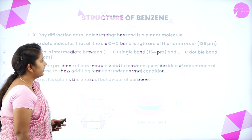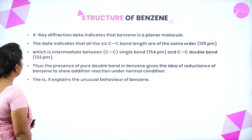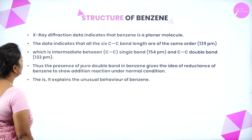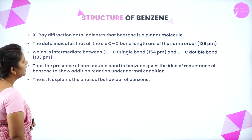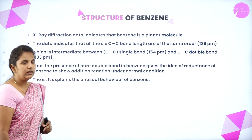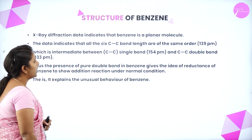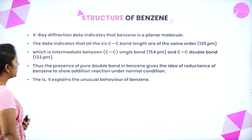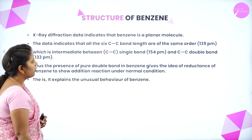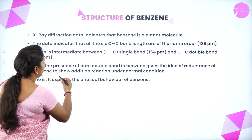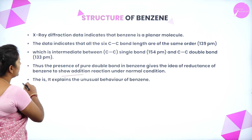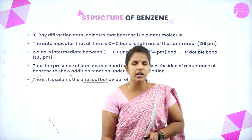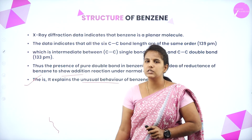The x-ray diffraction data indicates that benzene is a planar molecule and that all six carbon-carbon bond lengths are of the same order — 139 pm — which is intermediate between the carbon-carbon single bond length of 154 pm and the carbon-carbon double bond length of 133 pm. The absence of pure double bonds in benzene explains its reluctance to undergo addition reactions under normal conditions and its unusual behaviour.